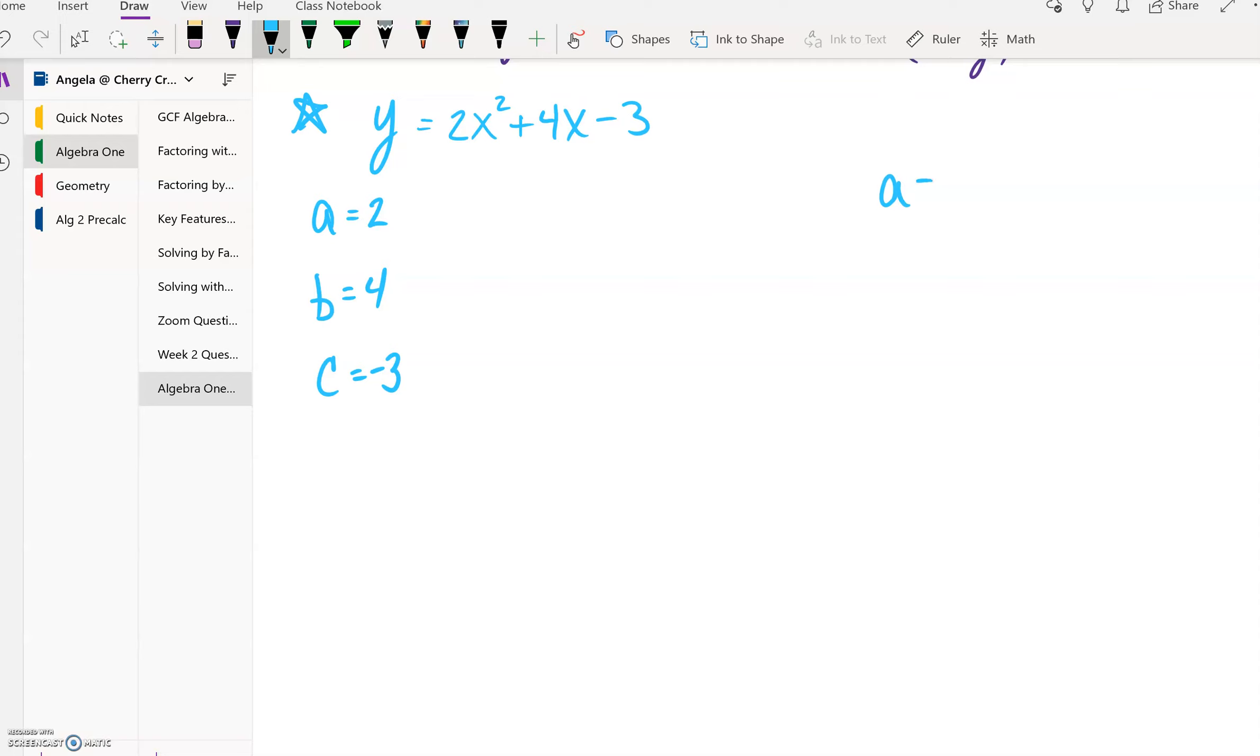So for vertex form, we need our a value, and we know our a value is 2. Perfect, so we already have that piece. The other piece is we are going to use the formula -b/(2a) to determine the x value of our vertex.